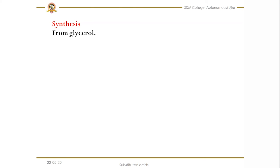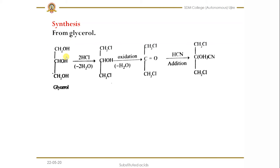We will see the synthesis of citric acid. I am going to explain only one method — that is from glycerol. Glycerol is an example of a trihydroxy compound; you can see there are three hydroxy groups. When you treat glycerol with two molecules of hydrogen chloride, the Cl replaces only the two primary hydroxy groups, and we get a corresponding product. When you then do the oxidation of this compound — using any reagent like HNO3 or potassium permanganate — the hydroxy group is converted into a carbonyl group.